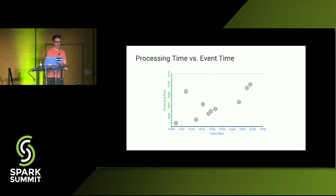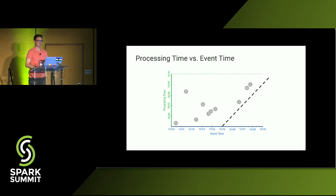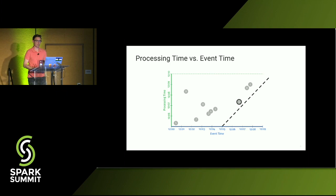Here we have event time on the x-axis and processing time on the y-axis. If everything were perfect, you'd see a completely linear event and processing time distribution. But you don't. For example, event 9 was processed about 7 minutes after it originated. So you're handling out-of-order data and data at different periods of time, which can be quite tricky when thinking about stream processing.